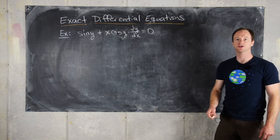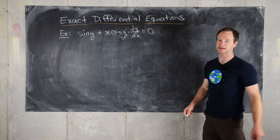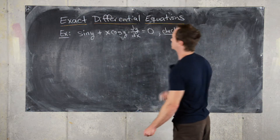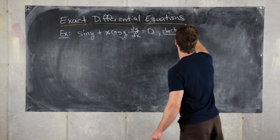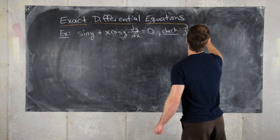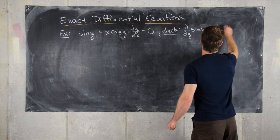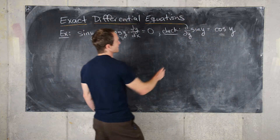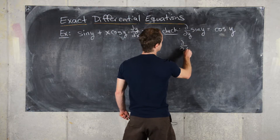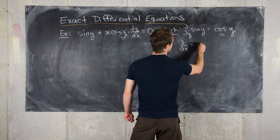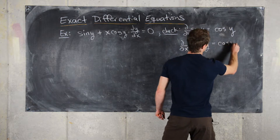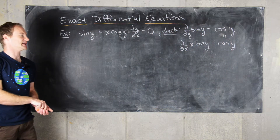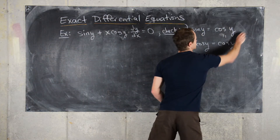Now let's look at an example. First, we'll check that it's exact. We need to take the partial with respect to Y of sin Y, which is obviously cos Y, and then take the partial with respect to X of X cos Y, which is also cos Y. Since these two are equal, it is an exact differential equation — check.